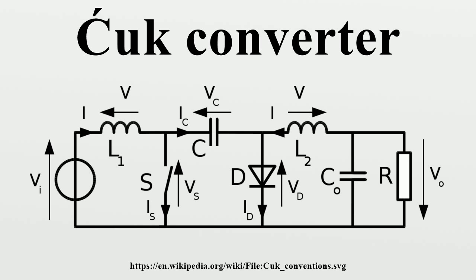In continuous mode steady state, the energy stored in the inductors has to remain the same at the beginning and at the end of a commutation cycle. The energy in an inductor is given by this relation, which implies that the current through the inductors has to be the same at the beginning and the end of the commutation cycle. As the evolution of the current through an inductor is related to the voltage across it, the average value of the inductor voltages over a commutation period has to be zero to satisfy the steady state requirements. If the capacitors C and Co are large enough for the voltage ripple across them to be negligible, the inductor voltages become as shown.